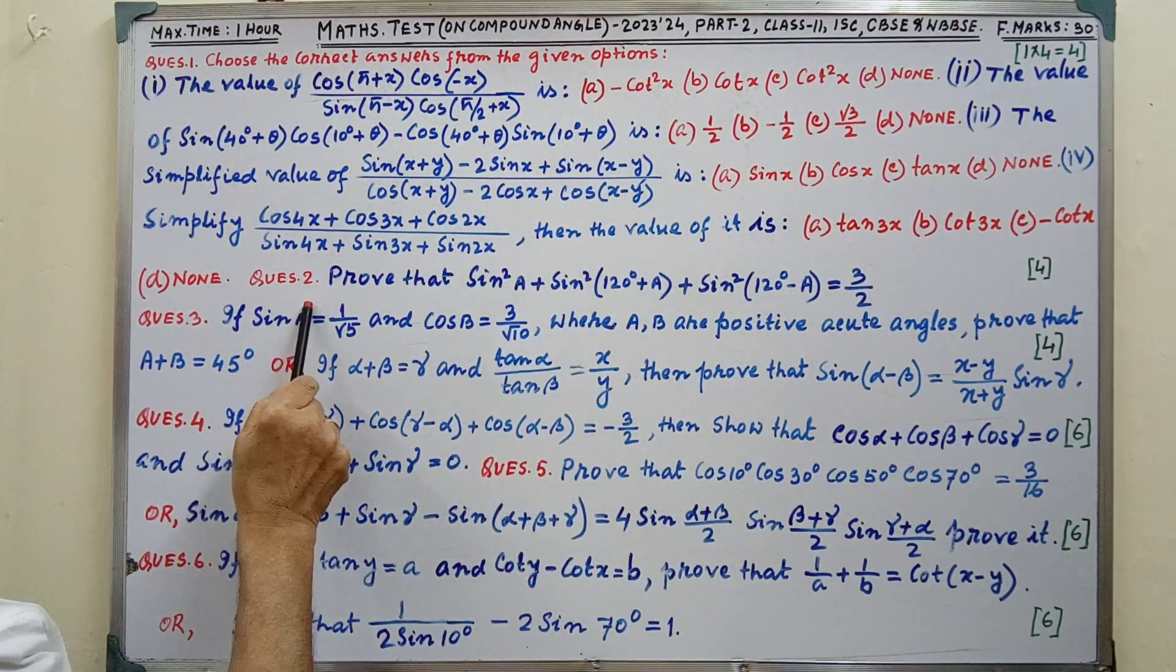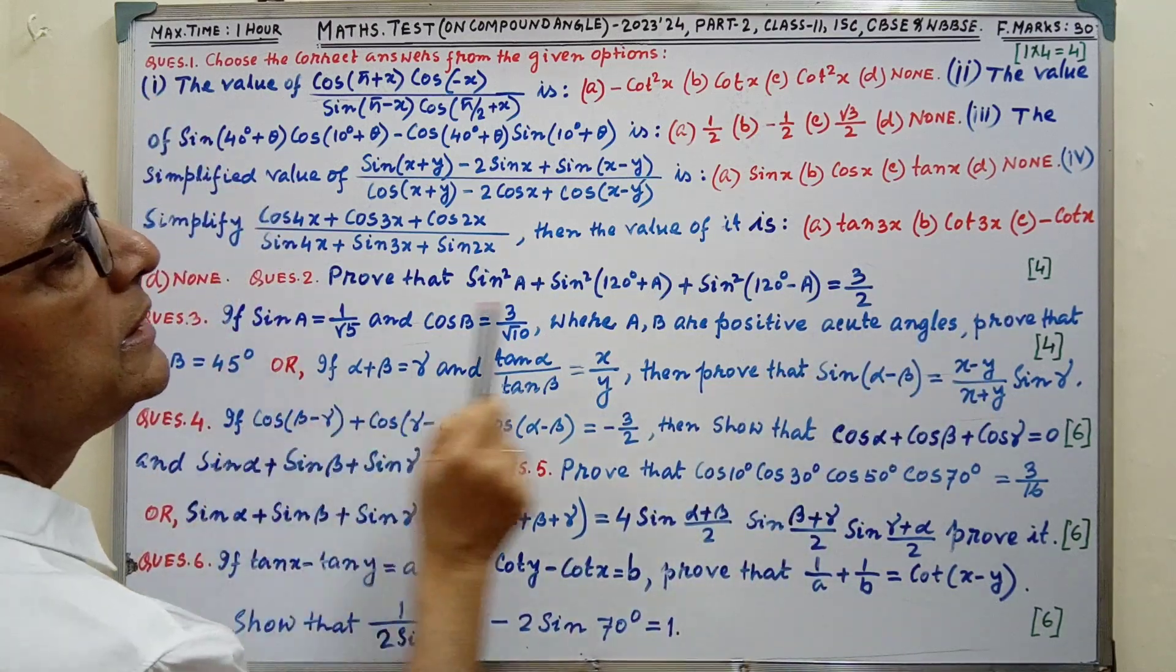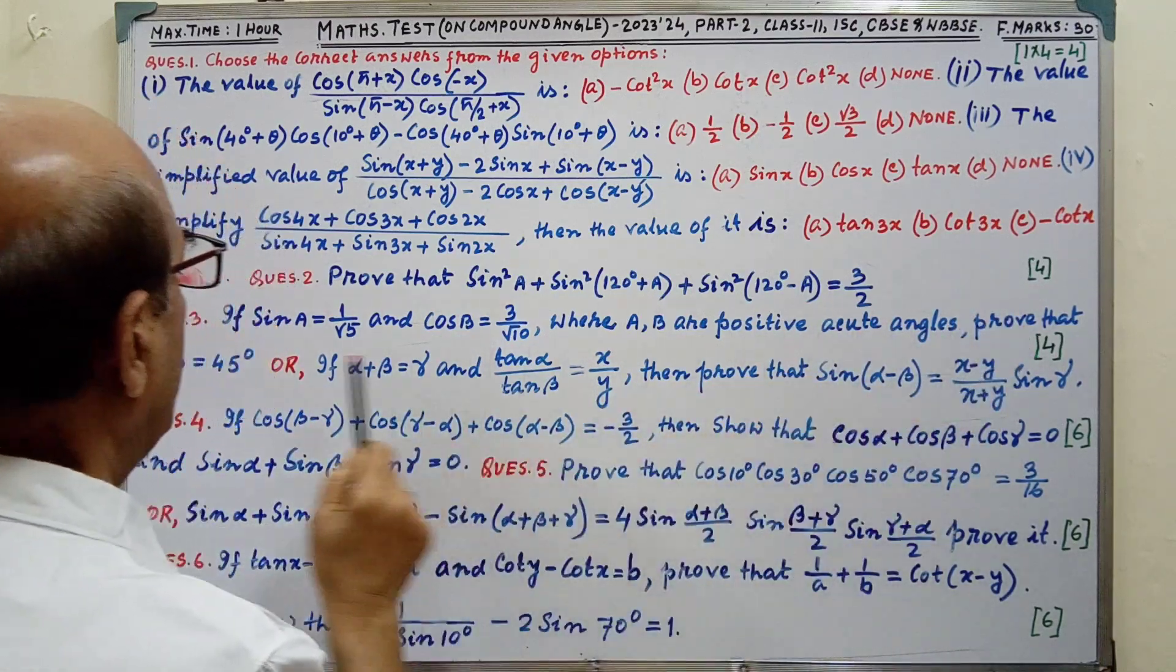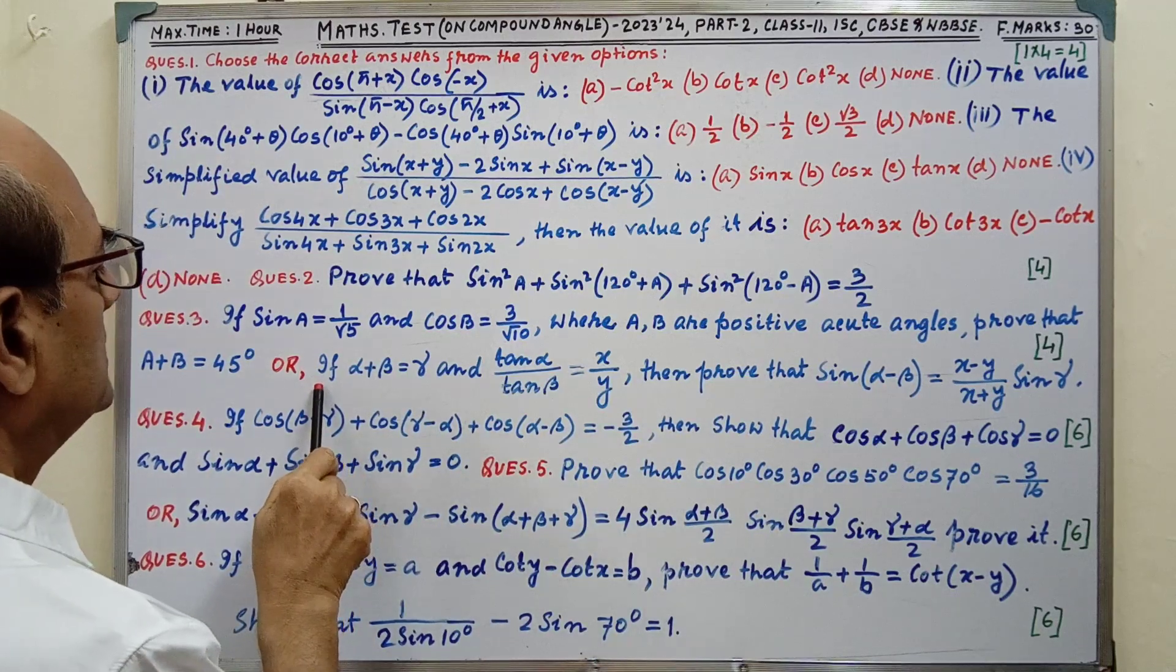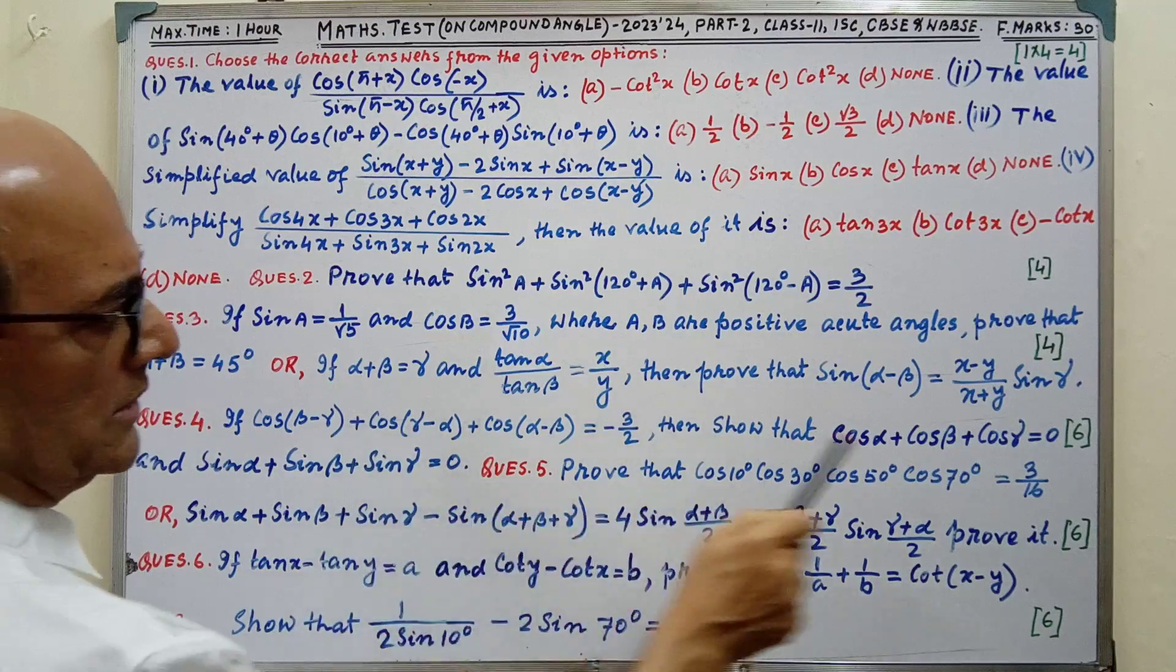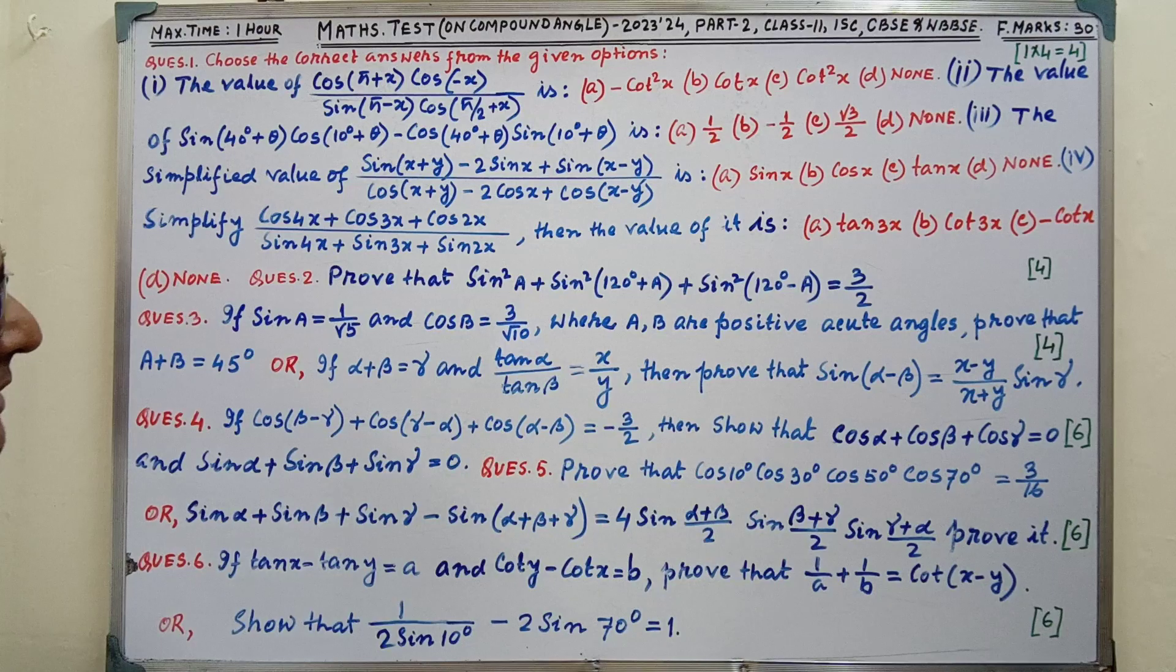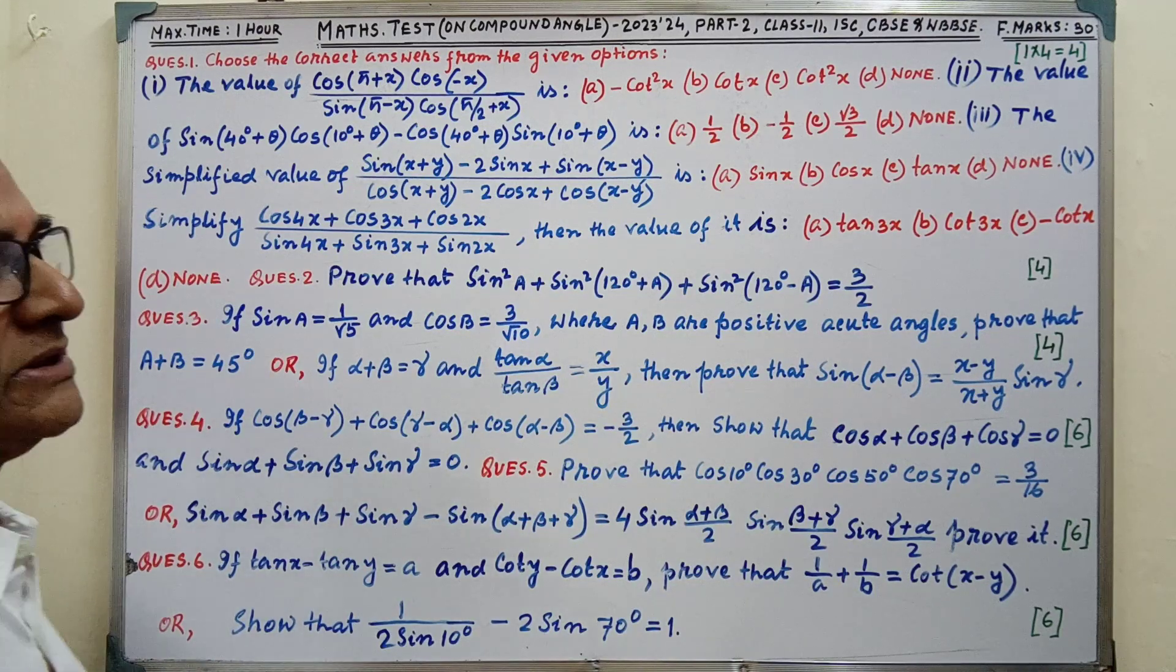Question number 2 marks 4. Question number 3 also marks 4. And there is internal option. Question number 4 that is 6 marks. Question number 5, 6. And question number 6 also marks 6.